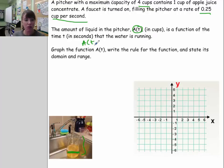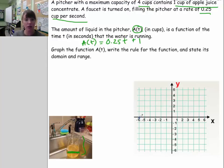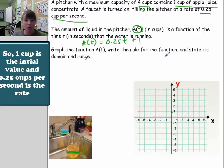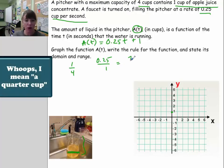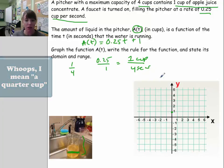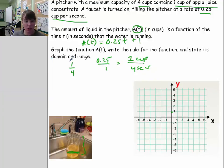The function a(T) starts with 1 cup of apple juice, so the y-intercept is 1. The slope is 0.25 cups per second. To graph it, I'll start at 1. Since 0.25 equals 1/4, the slope can be written as 1 over 4 — a rise of 1 cup every 4 seconds. So it's a little easier to use 1 over 4. I'll go up 1 and run 4 to find points.